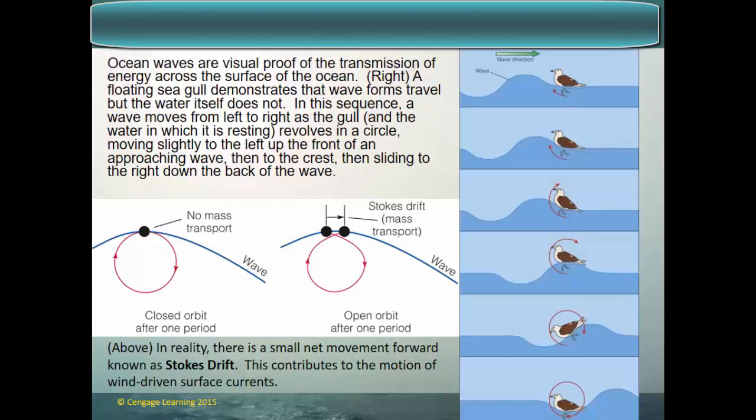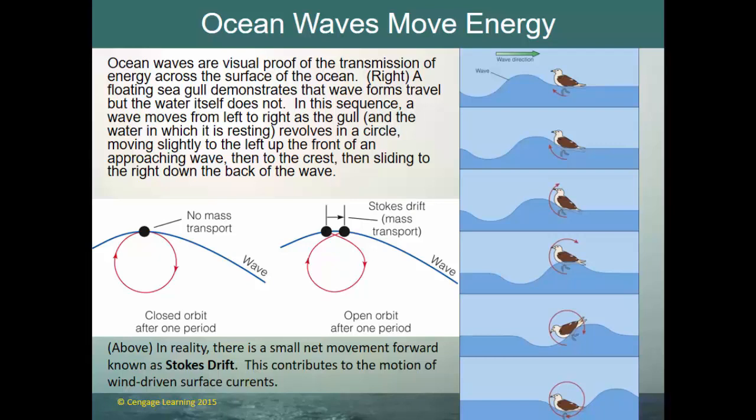Ocean waves move energy, not water. Ocean waves are visual proof of the transmission of energy across the surface of the ocean. To the right, we can see a floating seagull that demonstrates the way a wave travels but the water does not. The wave moves from left to right, and the gull revolves in a circle — moving slightly to the left, up the front of the approaching wave, then to the crest, and then sliding to the right down the back of the wave.